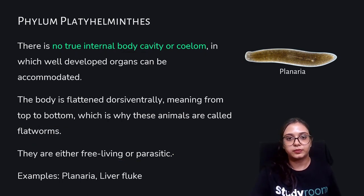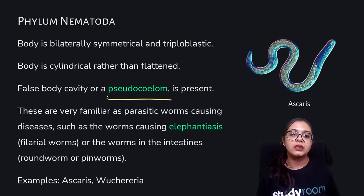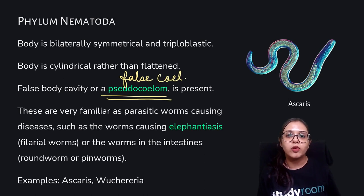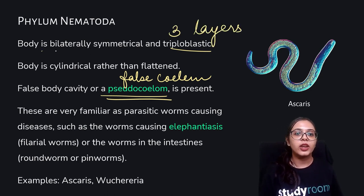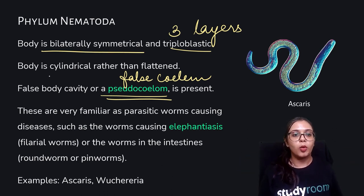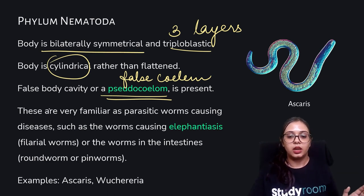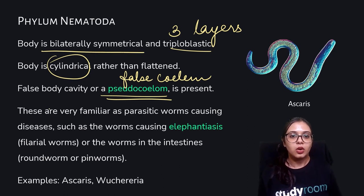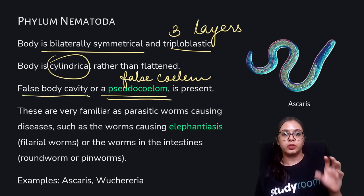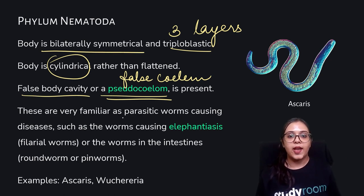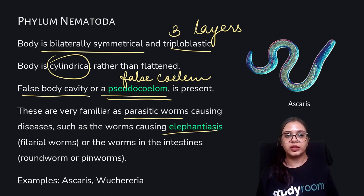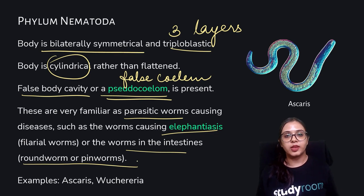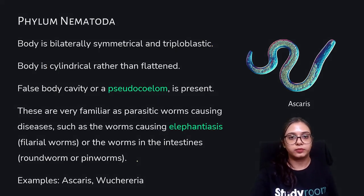The phylum Nematoda has a pseudocoelum — a false body cavity. This is also triploblastic with all three germ layers: ectoderm, mesoderm, and endoderm. The body is bilaterally symmetrical and cylindrical rather than flattened — like Ascaris, which is cylindrical and tubular. No true coelum is present. These are familiar as parasitic worms; for example, the filarial worms causing elephantiasis, roundworms, and pinworms in the intestine. Examples: Ascaris and Wuchereria.